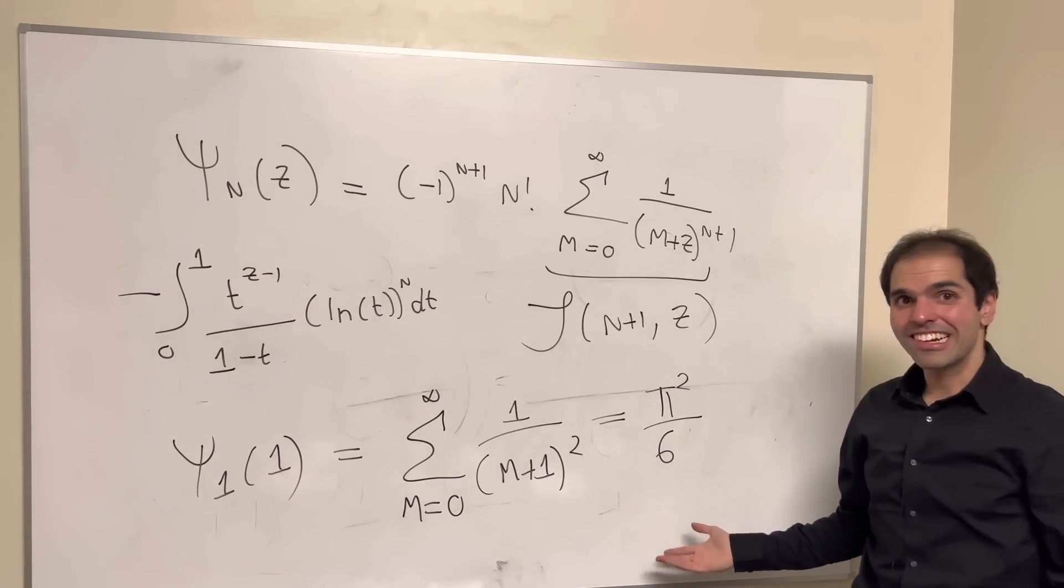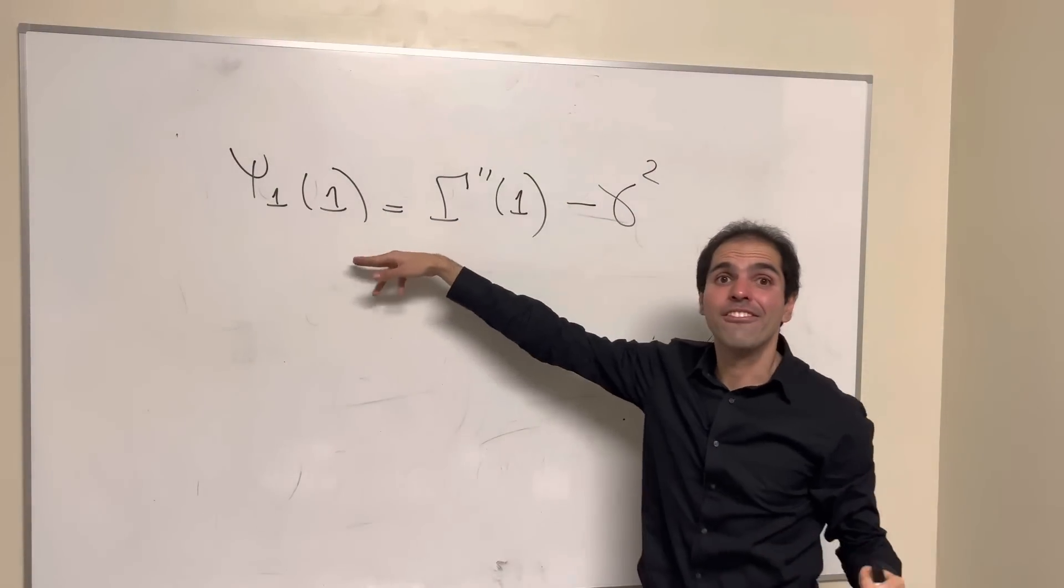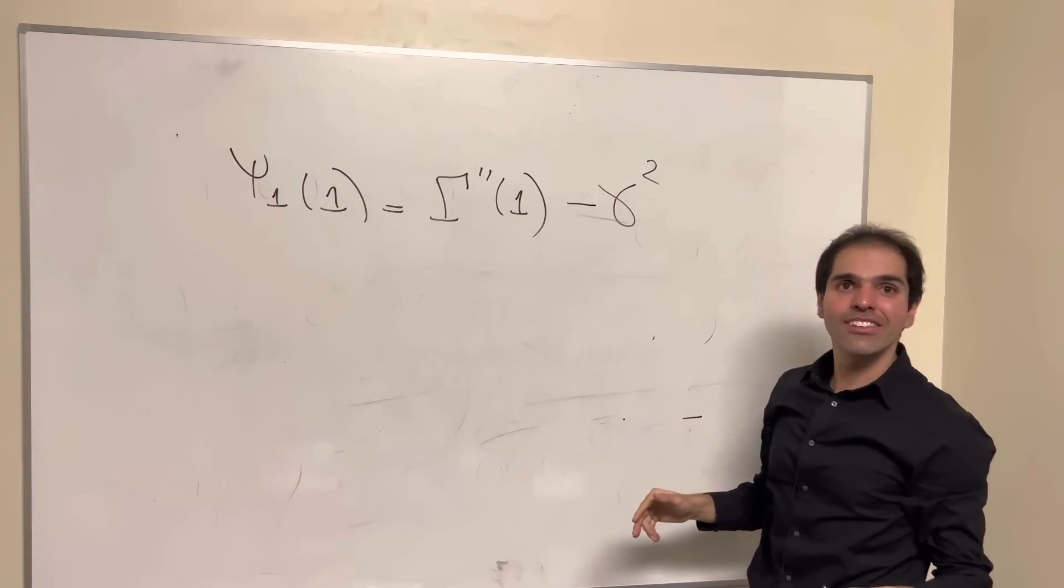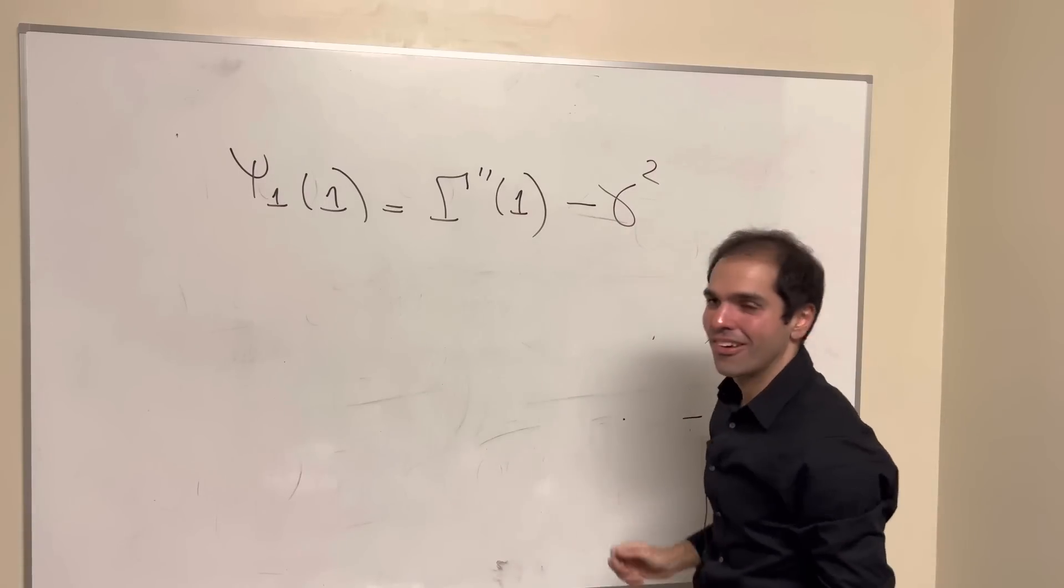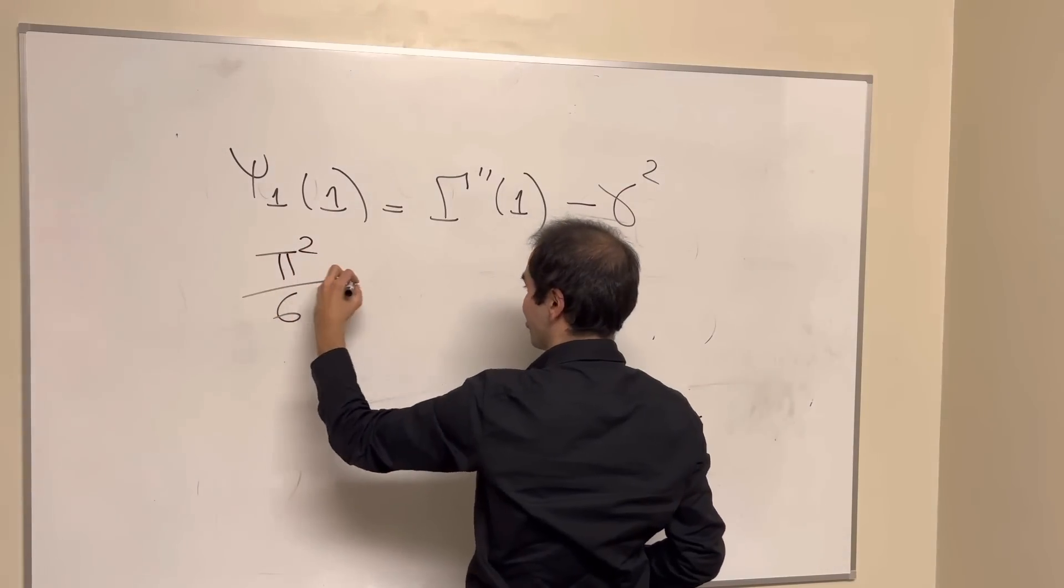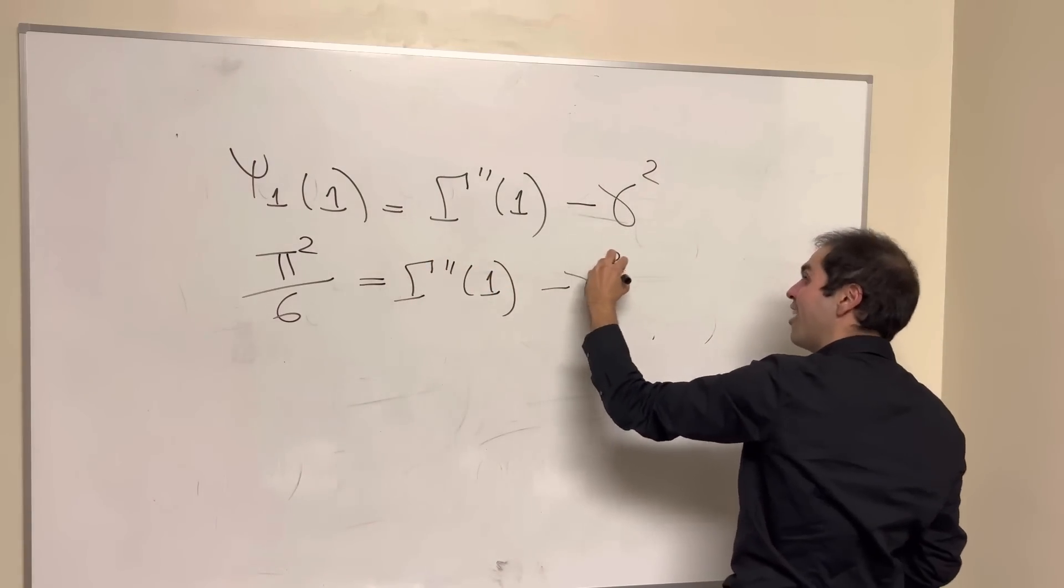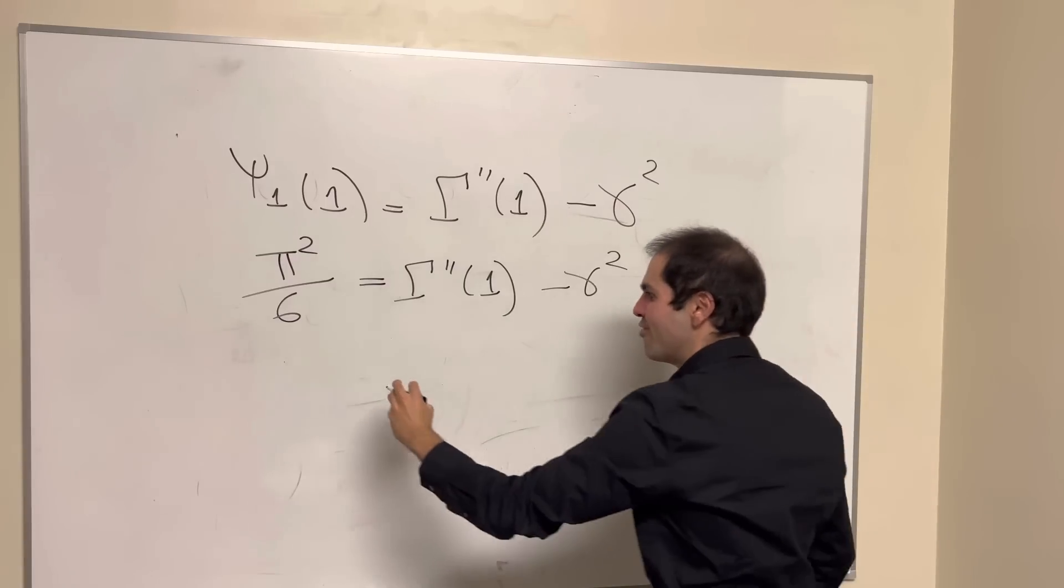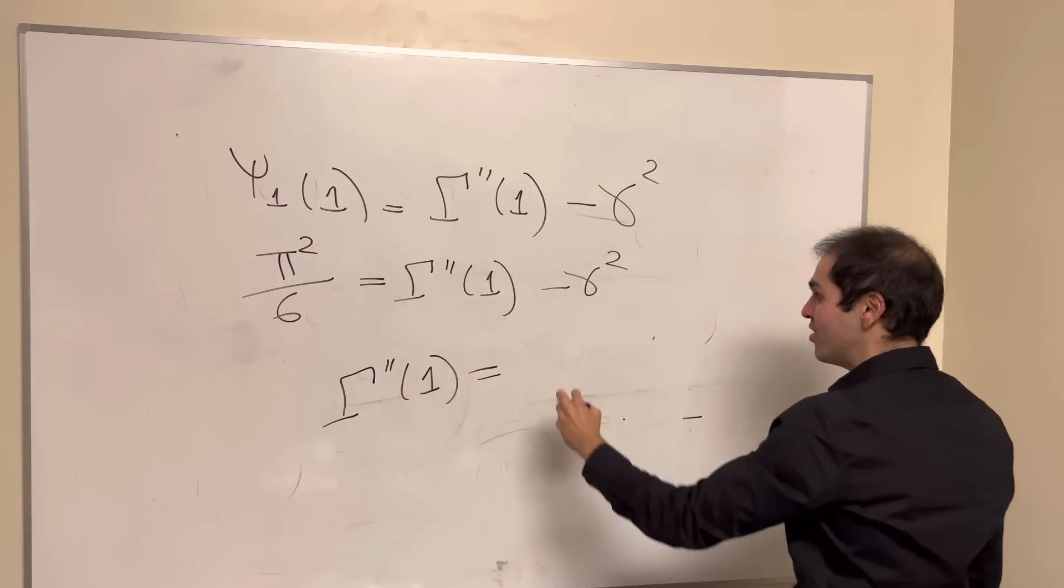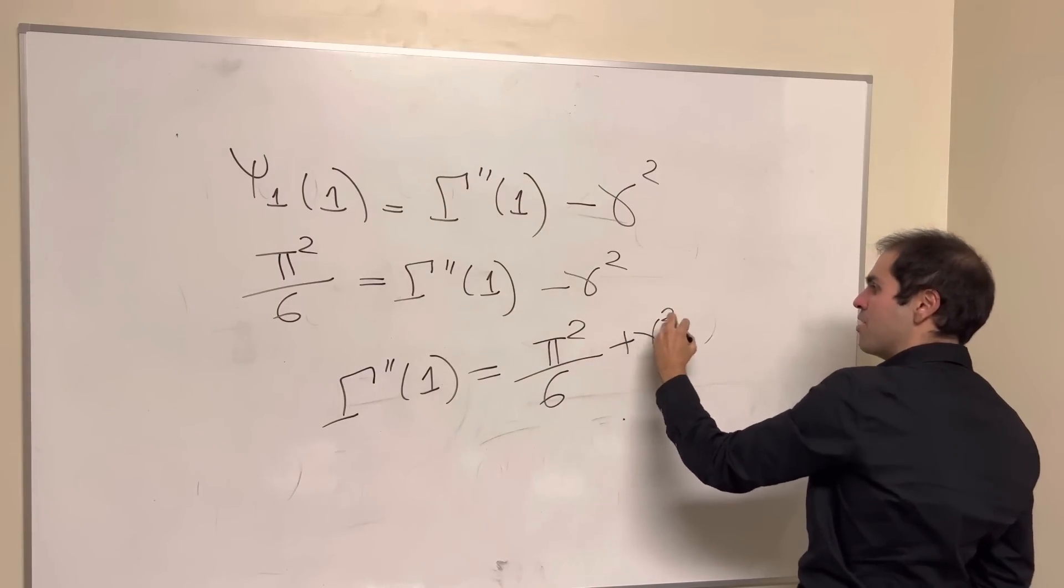And how does that help us conclude? Well, welcome to the epic finale. What did we have? We had the polygamma function of order 1 at 1 is the second derivative of gamma at 1 minus Euler-Mascheroni squared. But you just found that to be pi squared over 6. So we get the following, and finally, an absolutely stunning formula, in my opinion, we get that the second derivative of gamma at 1 is just pi squared over 6 plus Euler-Mascheroni squared.